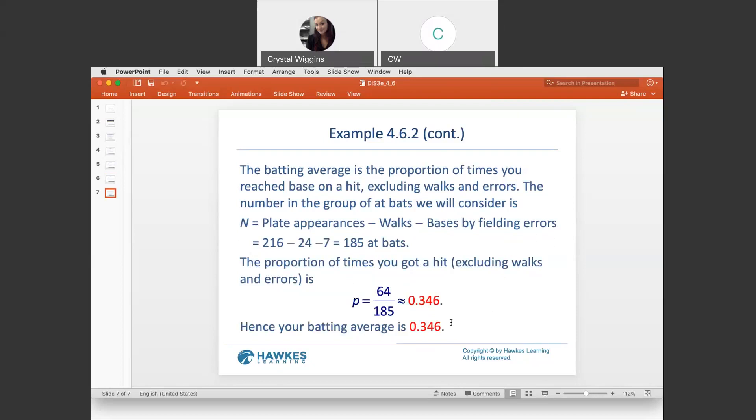Or, multiplying by 100, 34.6% of the time you got hits without it being a walk, meaning that the pitcher sucked, or errors, which I'm not exactly sure what they're including in the errors category.